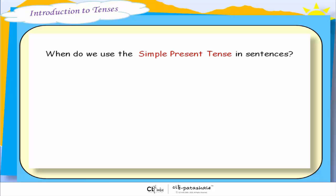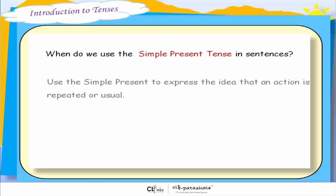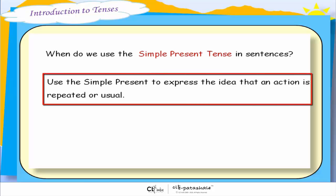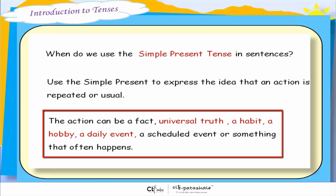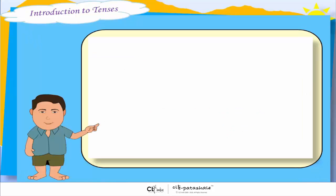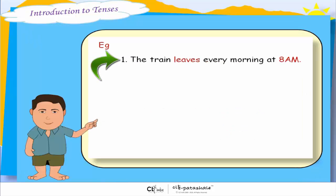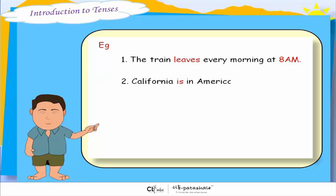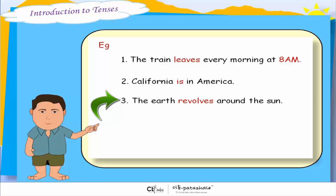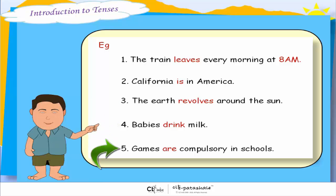When do we use the simple present tense in sentences? Use the simple present to express the idea that an action is repeated or usual. The action can be a fact, universal truth, a habit, a hobby, a daily event, a scheduled event, or something that often happens. For example: 'The train leaves every morning at 8am.' 'California is in America.' 'The earth revolves around the sun.' 'Babies drink milk.' 'Games are compulsory in schools.'